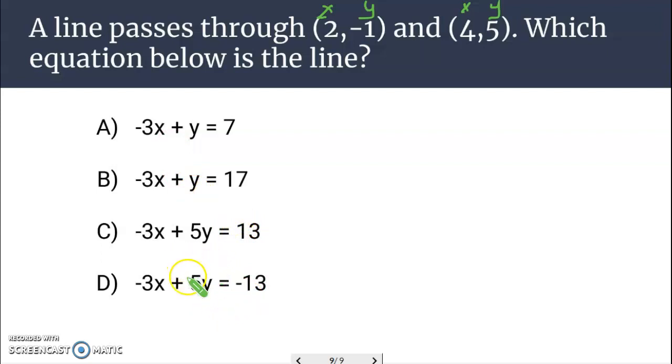Alright. Let's try C. We're going to try the first point. I'm going to put in (2, -1). So we have -3 times 2 plus 5 times -1. Does that equal 13? Negative 3 times 2 is negative 6. And 5 times -1 is negative 5. So I have negative 6 and negative 5. Does that equal 13? No, it does not. So I know C is not going to work. We can exit that out.